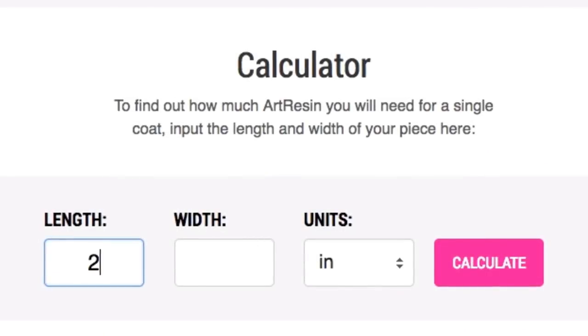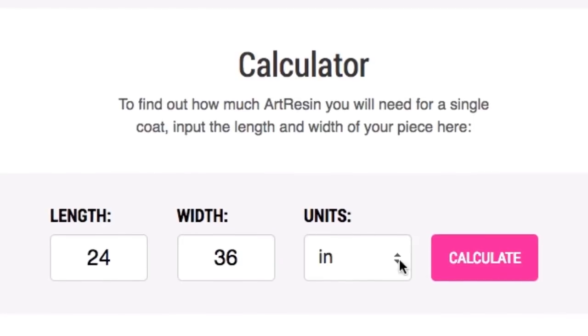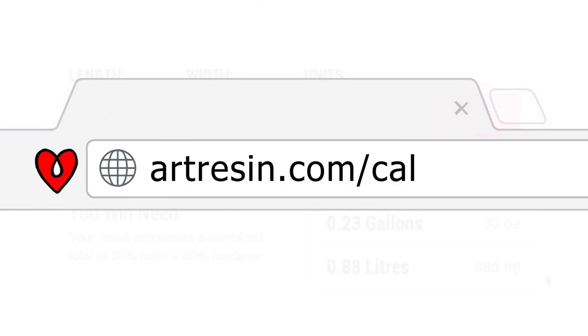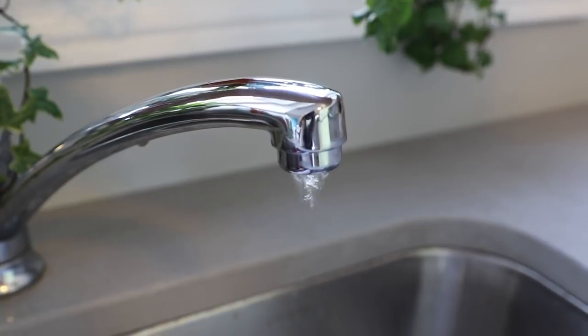To determine how much Art Resin you'll need, use our resin coverage calculator at artresin.com/calculator. Some people like to warm their resin and hardener in a water bath before measuring it out to reduce bubbles. Just make sure not to get any water in the resin or hardener as it will turn the mixture cloudy.